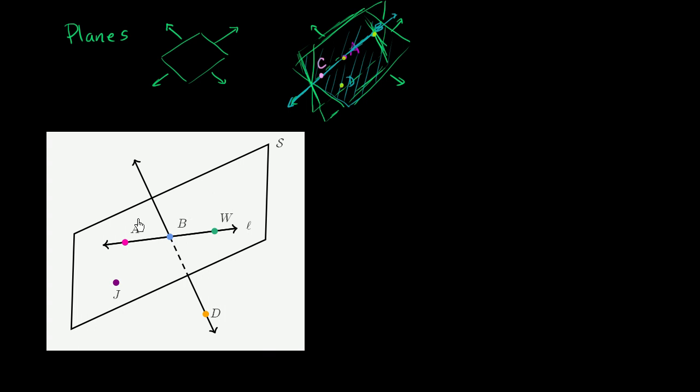So for example, right over here in this diagram, we have a plane. This plane is labeled S. But another way that we can specify plane S is we could say plane—and we just have to find three non-collinear points on that plane. So we could call this plane A, J, B.